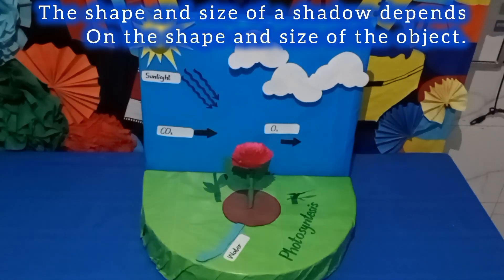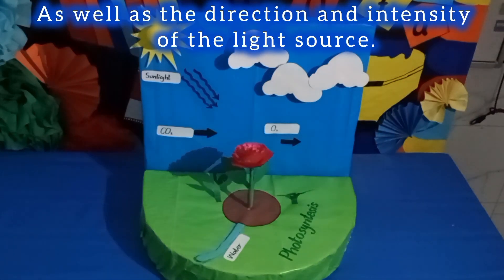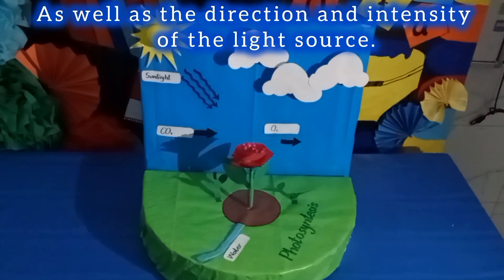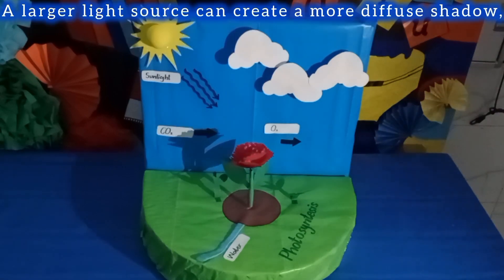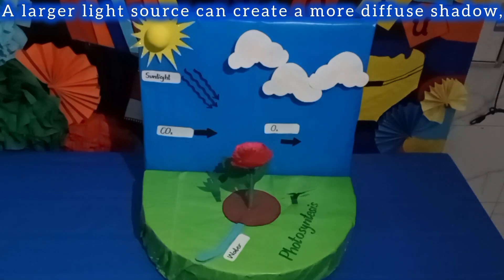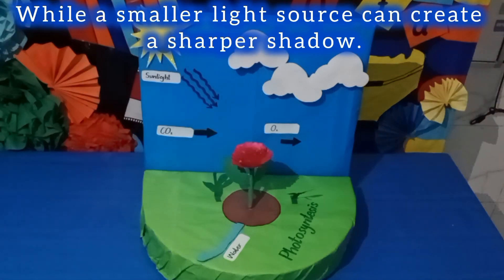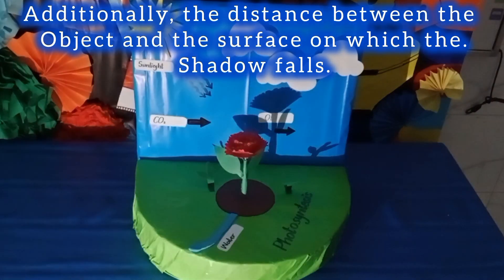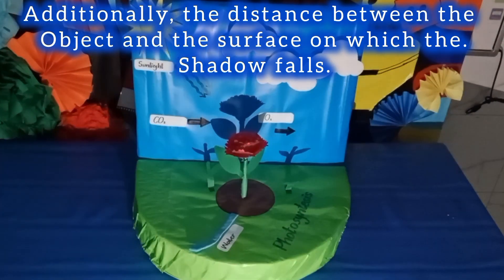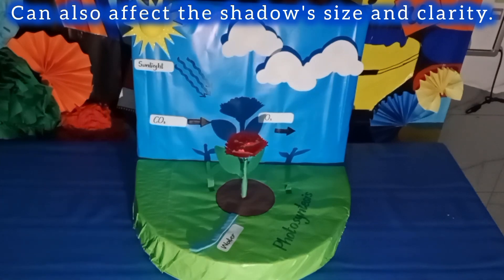The shape and size of a shadow depends on the shape and size of the object, as well as the direction and intensity of the light source. For example, a larger light source can create a more diffuse shadow, while a smaller light source can create a sharper shadow. Additionally, the distance between the object and the surface on which the shadow falls can also affect the shadow's size and clarity.